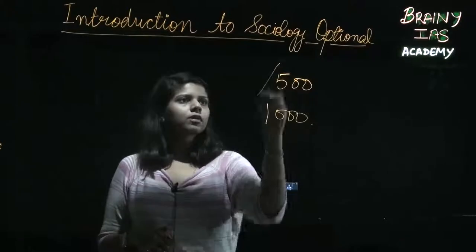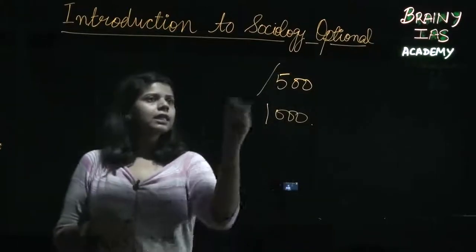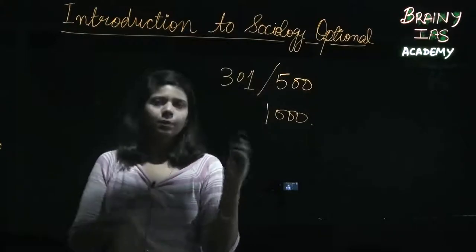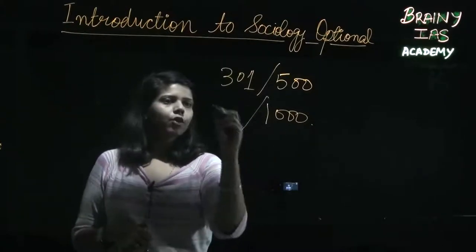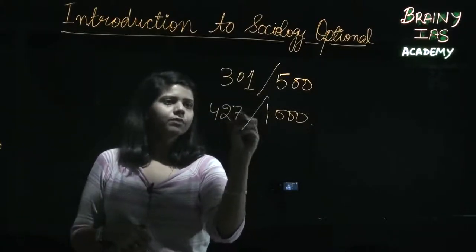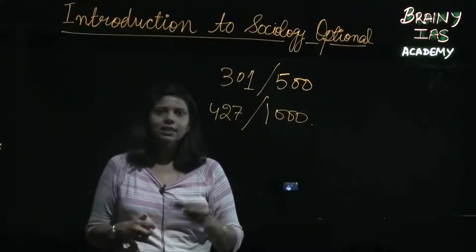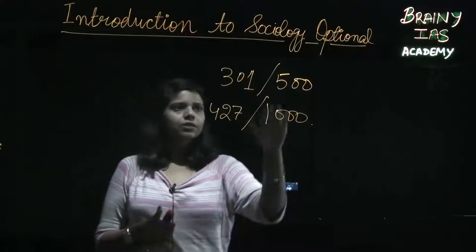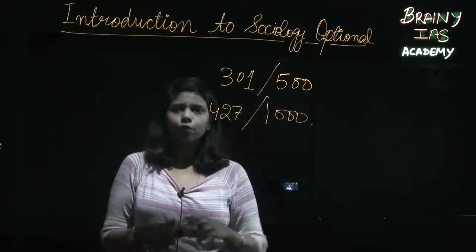But let me tell you, from my own personal experience, I got 301 in Sociology, paper 1 and paper 2, and I got 427. So you can see that the marks in terms of percentage that one scores is really very high when it comes to optional.